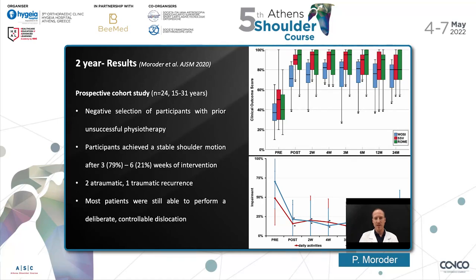We obviously wanted to examine our results in a more scientific way, so we conducted a prospective cohort study of 24 cases of patients with previously failed conventional physiotherapy. We could improve significantly the outcome of these patients quite rapidly. Even though there was a quite large standard deviation, we were able to obtain stability with only little numbers of recurrence. Interestingly, these patients were still able to perform a deliberate controllable dislocation, but if they did not want to, the shoulder remained stable — and this is an important difference.